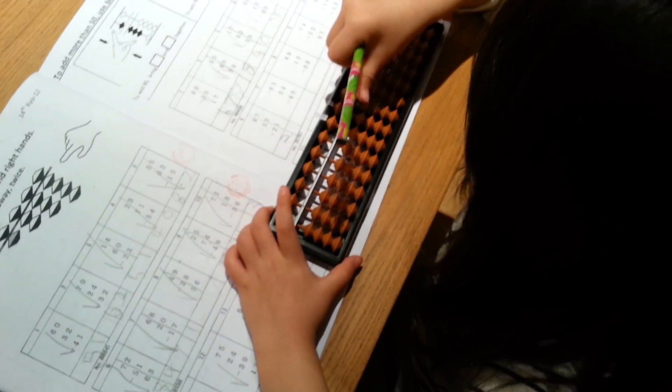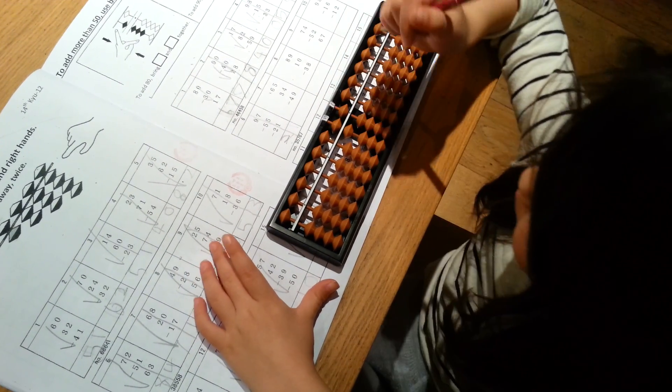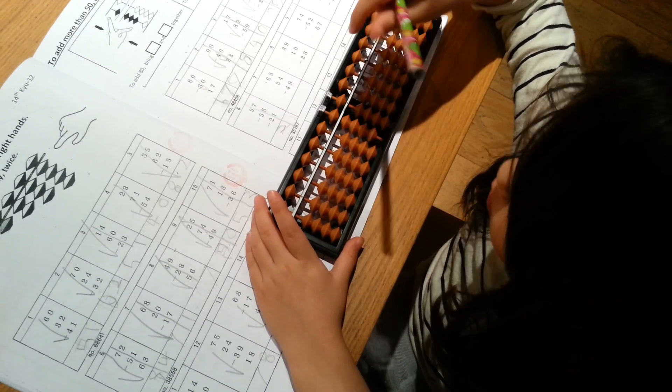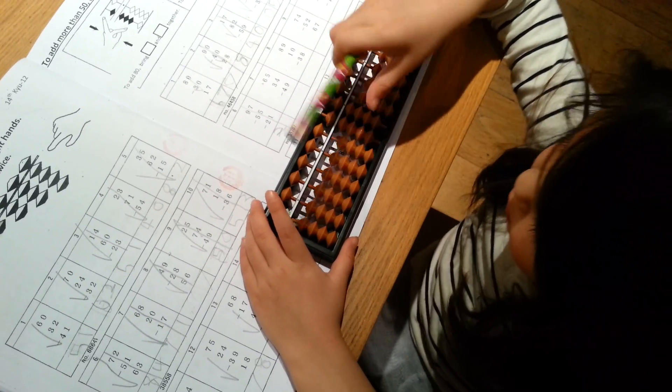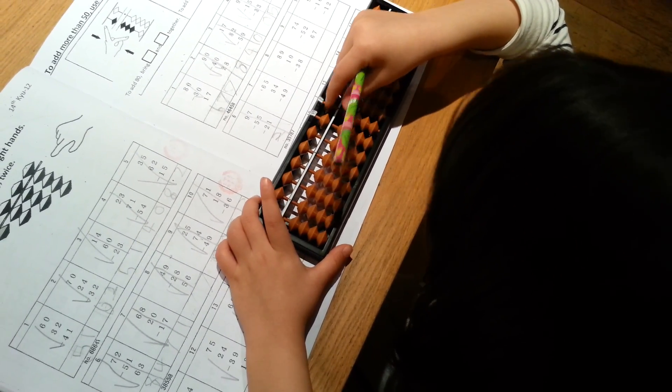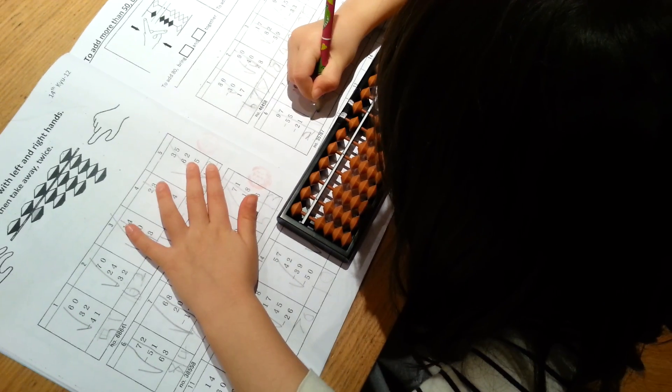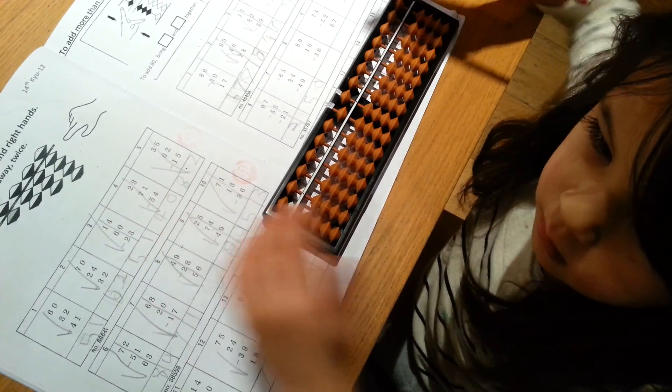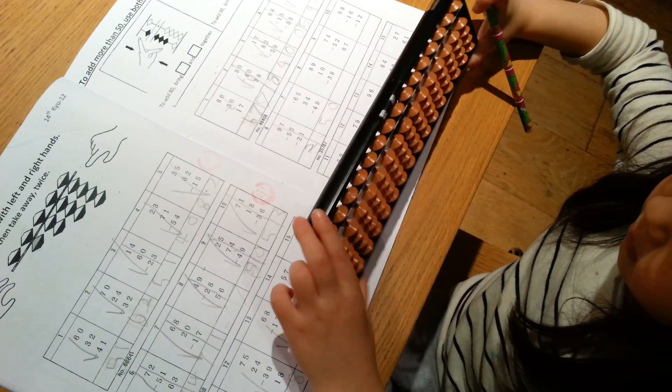So, 30, 4, yeah. Take away 49, yeah. Okay, next one. Concentrate, good.